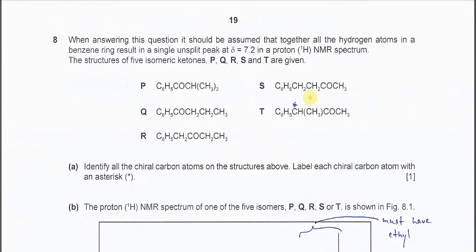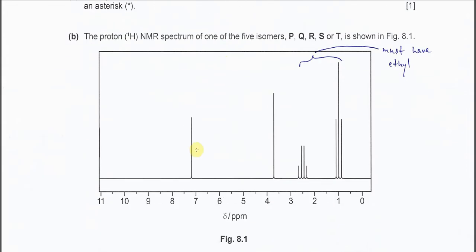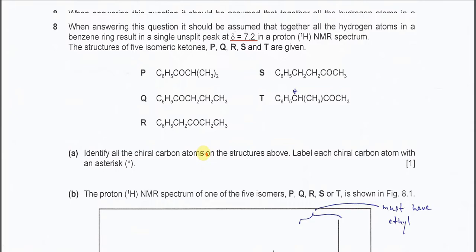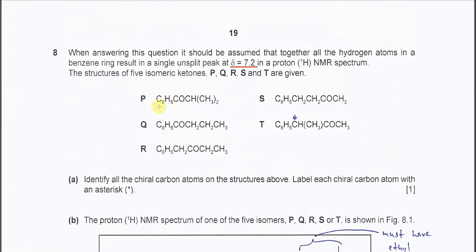Question 8. In this question, one term is specified: the chemical shift around 7.2. This singlet represents the protons in the benzene ring. Whenever you see a singlet at 7-point-something, these are the protons in the benzene ring — all these protons.